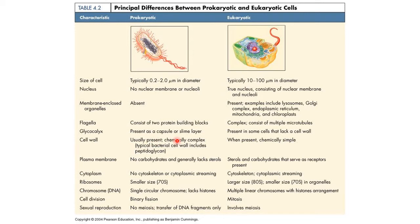Glycocalyx is present in prokaryotes as a capsule or slime layer — for example, bacteria have a capsule made up of glycocalyx. It is present in some cells that lack a cell wall. Cell wall is usually present in prokaryotes and is chemically complex, typically including peptidoglycan. In eukaryotes, when a cell wall is present — such as in fungi — it is chemically simple, made up of chitin, or in plants, cellulose.